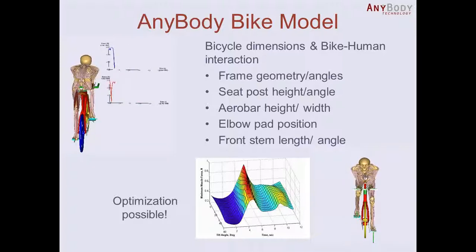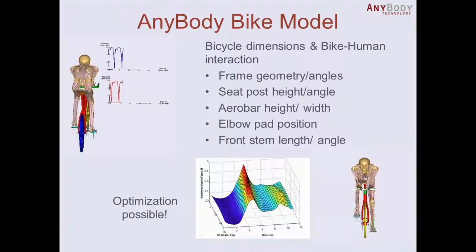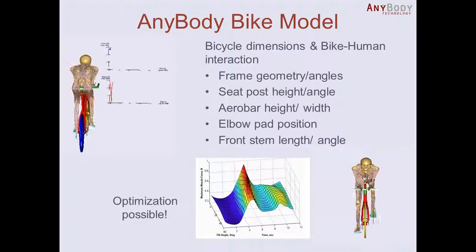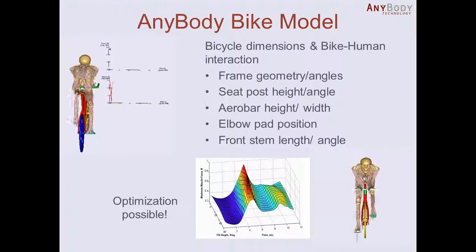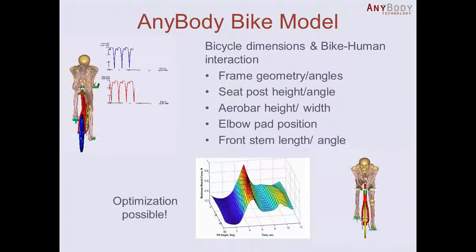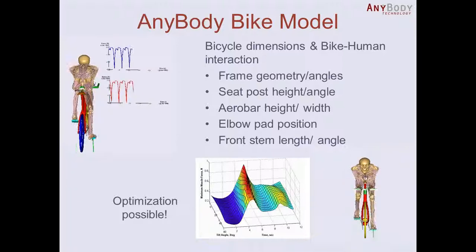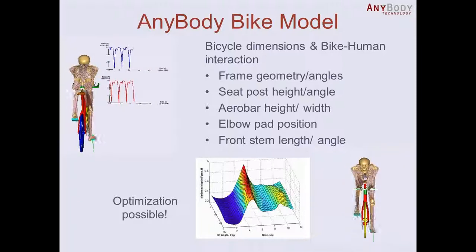For example, if you have different frame geometries for a bike you can analyze that. A time trial bike versus a more standard race bike will have different angles, frames, and positions of the crank and saddle.